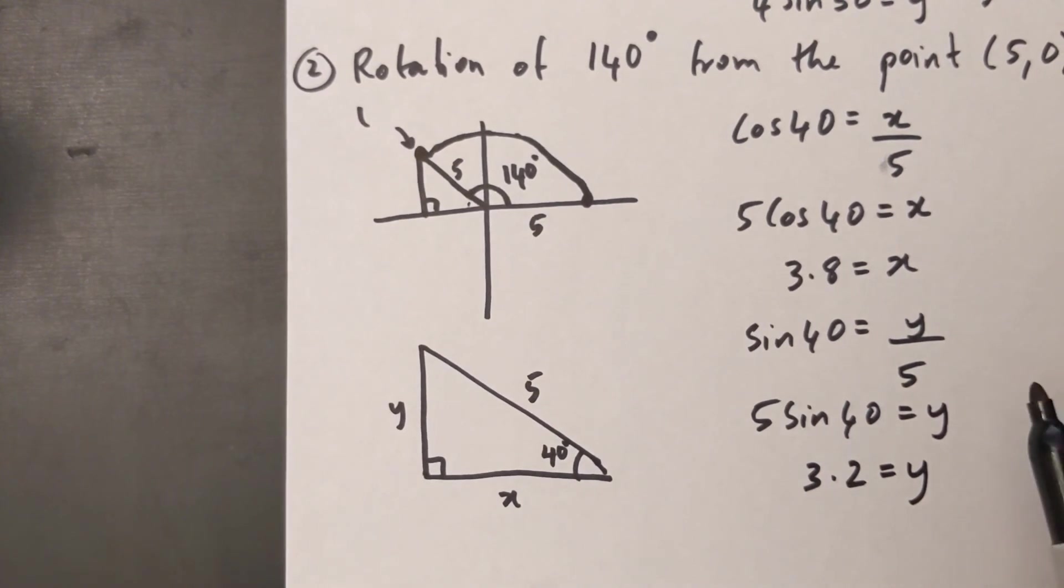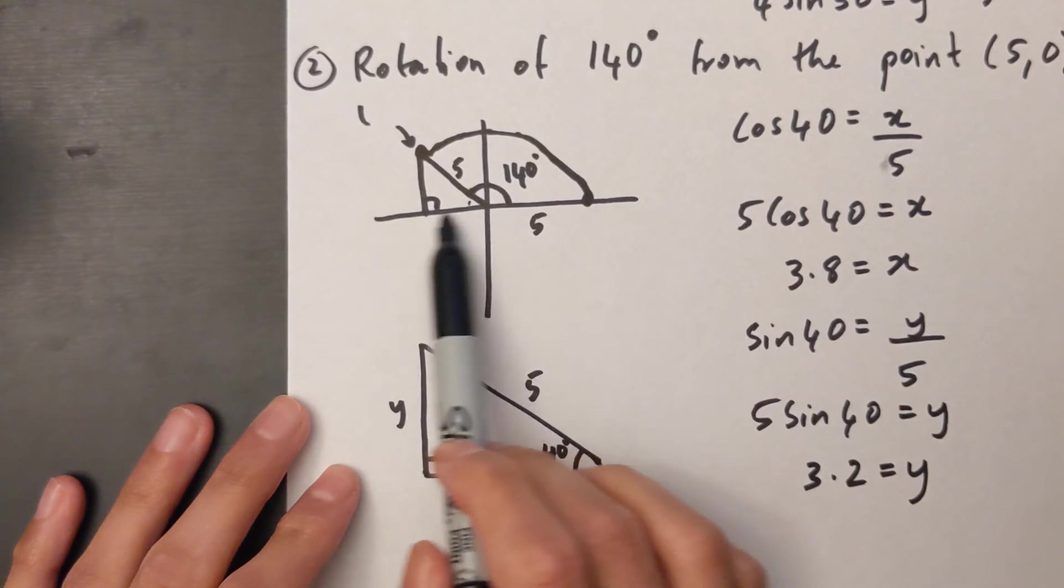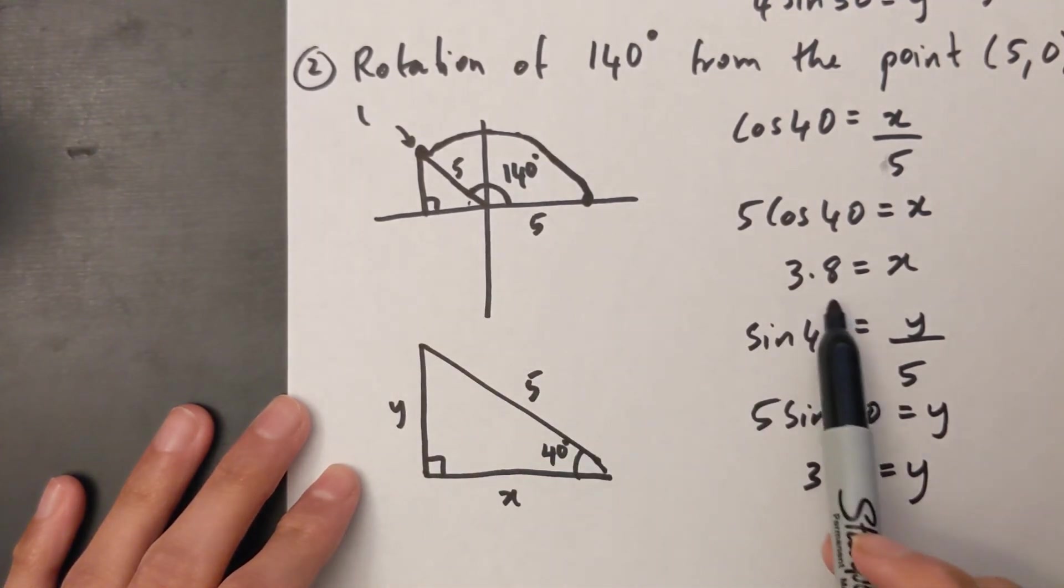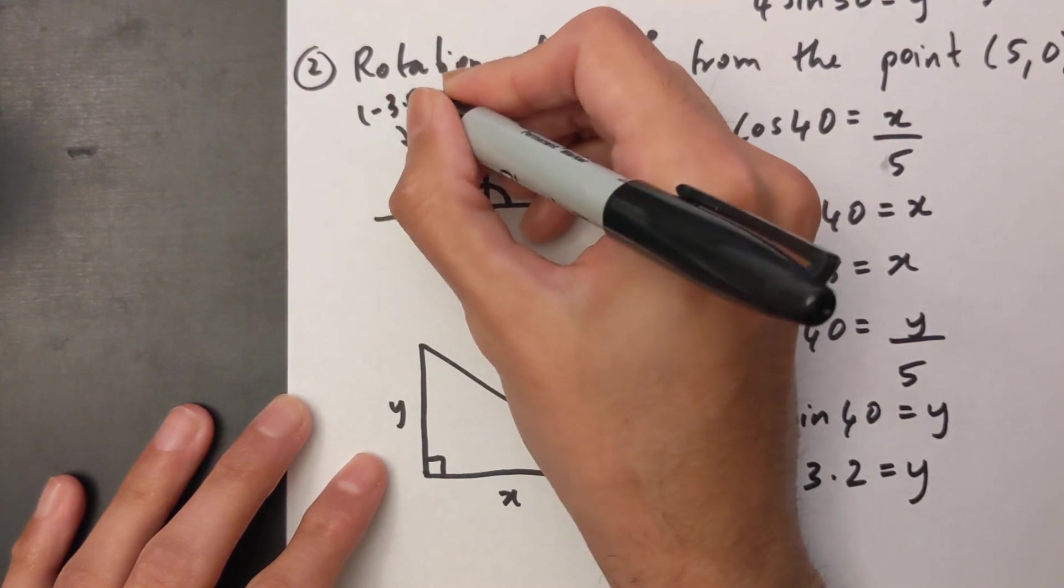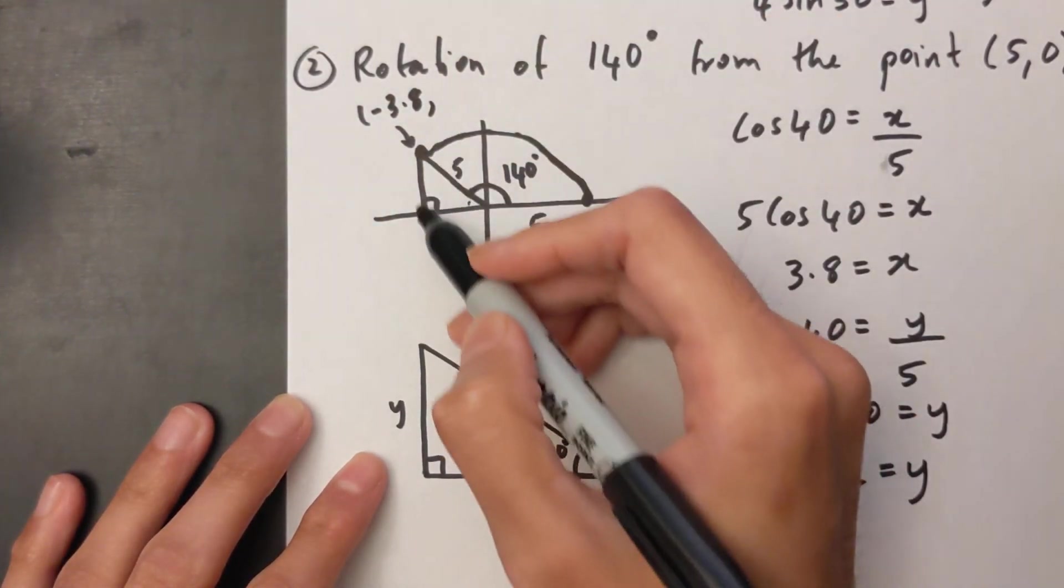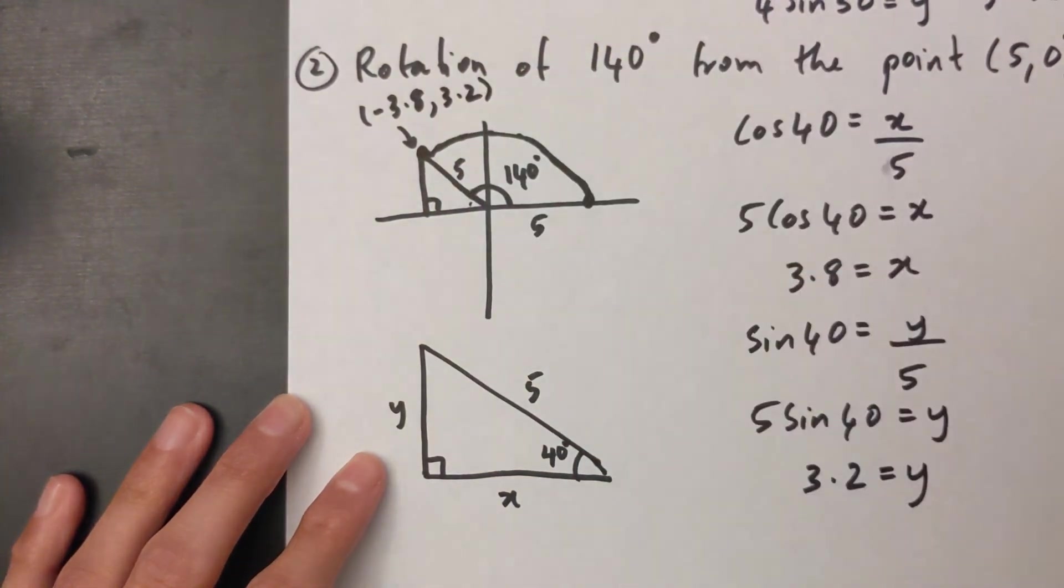So now I have my X and my Y coordinate, but when you notice it over here, the X coordinate is in the negative side. So my X is not going to be 3.8, it's going to be negative 3.8. My Y is still in the positive side, so it's just going to be positive 3.2.